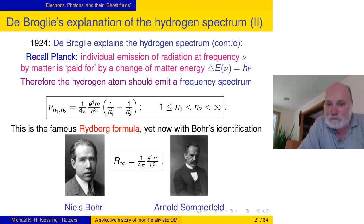What does he do next? Recall what Planck said. Individual emission of radiation at frequency nu by matter is paid for by a change of matter energy. It's a single emission. Therefore, the difference in the energies of the hydrogen atom, when you write them down, the rest energy cancels. I take the Taylor expanded version, gives you these energies, h times nu divided by h. That gives you this frequency formula. And that's the famous Rydberg formula that he gets out of it. Here there is not the empirical R. There is this formula for what R is, which was found earlier by Bohr.